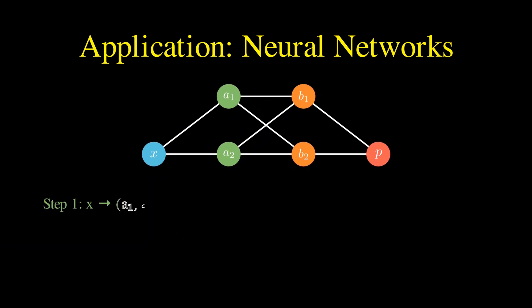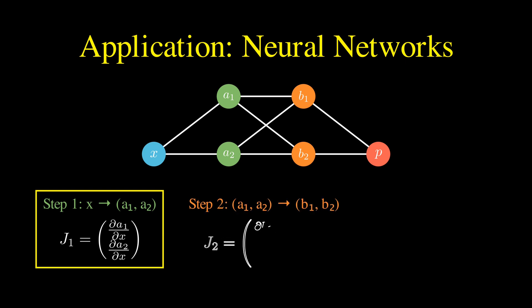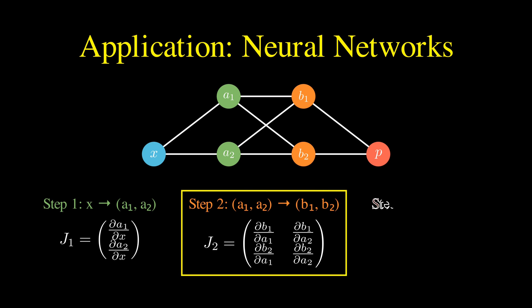First transforming the input x into a vector of hidden activations a1 and a2, then transforming this vector into another hidden layer with activations b1 and b2, and finally combining these to produce the output p.